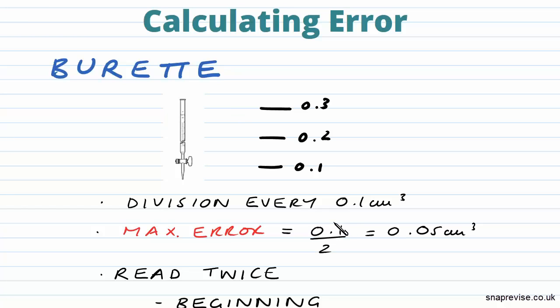So burettes have divisions about every 0.1 cm cubed, so the error will be 0.1 over 2. If you imagine this is our scale, we've got 0.1, 0.2, and 0.3. The error is plus or minus 0.05, so it's above and below 0.05 cm cubed.